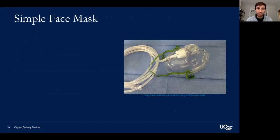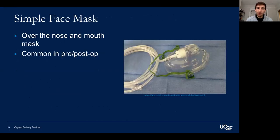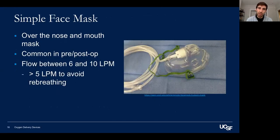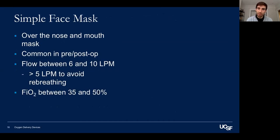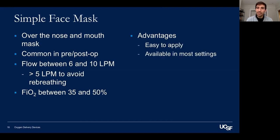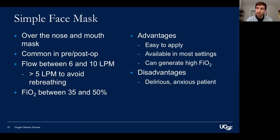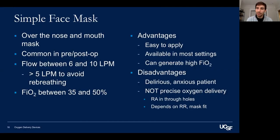A simple face mask covers the nose and mouth and is common in pre- and post-op settings. Flow is between 6 and 10 liters per minute — higher flows help avoid re-breathing within the mask. FiO2 ranges between 35 and 50%. Advantages are that it's easy to apply and available in most settings and can generate high FiO2. Disadvantages include poor tolerance in delirious or anxious patients, imprecise oxygen delivery, and aspiration risk in patients who are vomiting or nauseous.